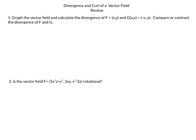For review, I have two problems for you to try. The first is to graph the vector field and calculate the divergence of f(x,y) = (x, y) and g(x,y) = (-x, -y), then compare or contrast the divergence of f and g. Second, is the vector field f = (3x²z + y², 2xy, x³ - 2z) rotational? I suggest you pause the video, give these problems a try, and when you come back I'll have solutions for you.